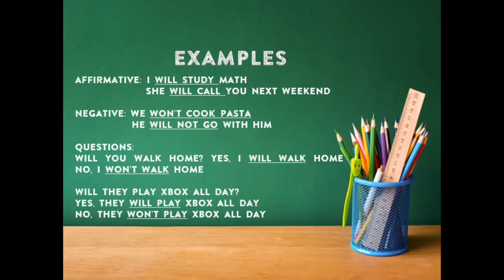El siguiente ejemplo: Will they play Xbox all day? Yes, they will play Xbox all day. No, they won't play Xbox all day. Tenemos la misma estructura: will, sujeto, verbo principal, complemento. En la positiva — they will play — ellos jugarán. Y en la negativa — ellos no jugarán — colocamos la contracción won't.